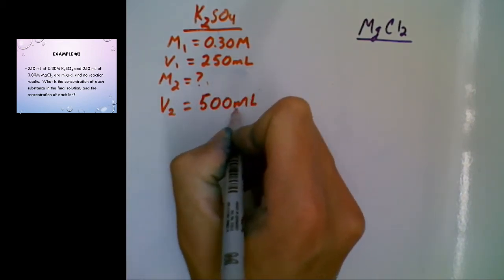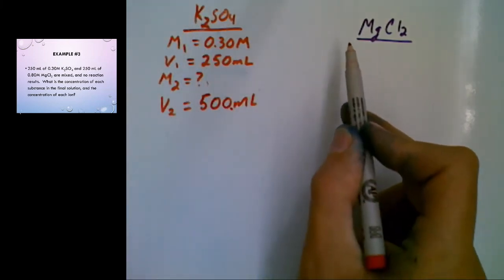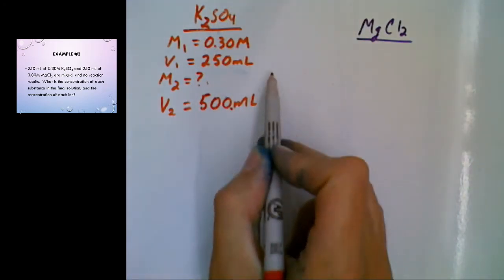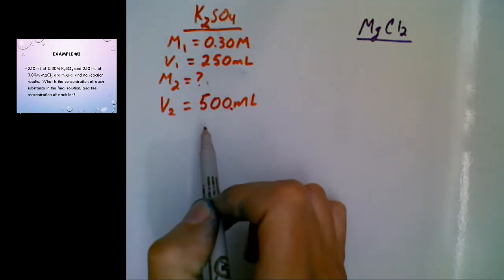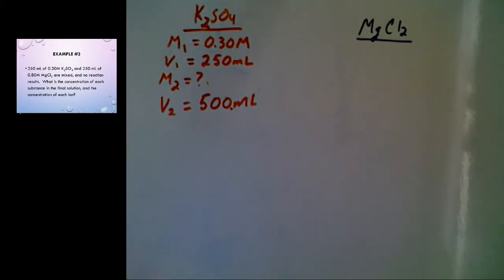The reason I know that is because this was 250, this was 250. You pour them both in the same container, that's going to be 500, right? Start with 250, 250, add them together, get your final volume.